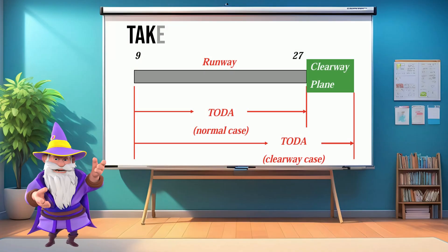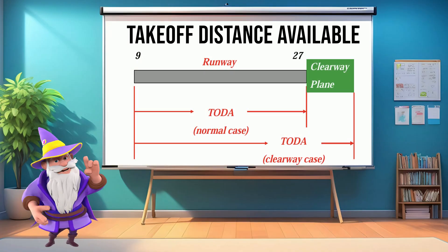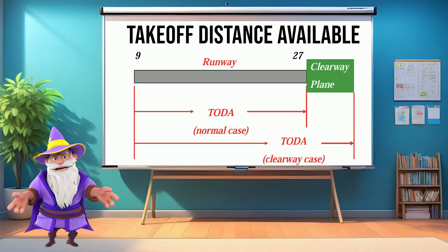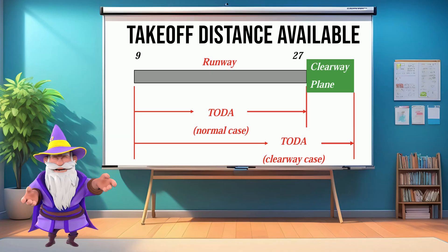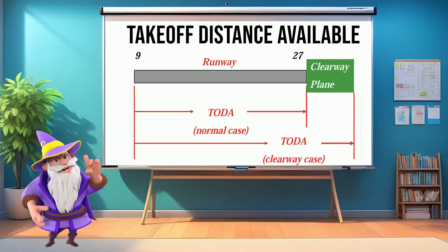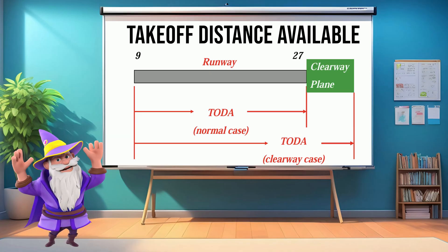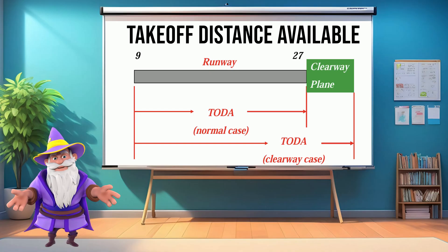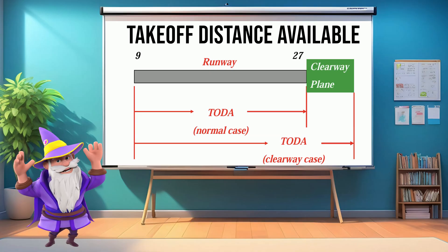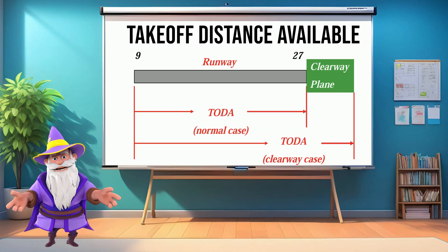Next, we have Takeoff Distance Available, or TODA. TODA is the total distance available for takeoff, which includes both the paved runway surface and any designated clearway beyond it. This is the TORA plus the clearway.